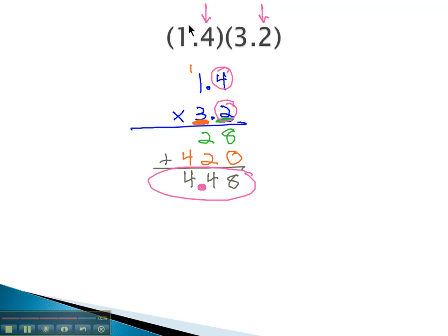Again, we can check if that's correct by just multiplying the whole number parts. 1 times 3 is 3. Our answer should be a little bigger than 3. 4.48 is a little bigger than 3, so I feel very confident about where we place that decimal.